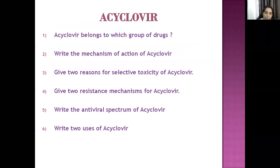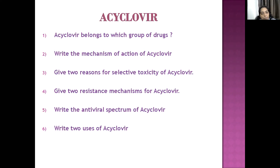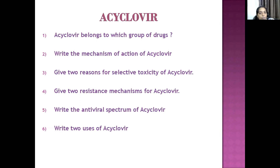The next drug is acyclovir, which is an antiviral drug. Its mechanism of action: acyclovir is first converted to acyclovir monophosphate by the viral thymidine kinase enzyme, then host kinase enzymes convert it to the diphosphate and triphosphate forms. This active triphosphate form inhibits viral DNA polymerase and decreases viral replication. For a half-month question, this summary is sufficient.